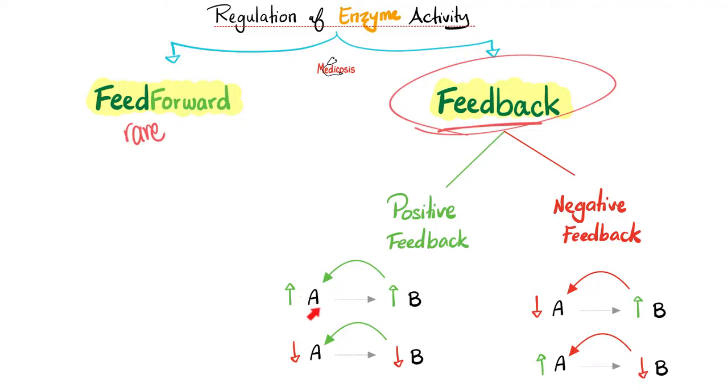Example of positive feedback. A led to B, which led to more A, which led to more B, which led to more A. Boom! We will explode. That's why positive feedback is rare, because it has explosive effects.